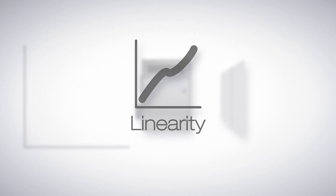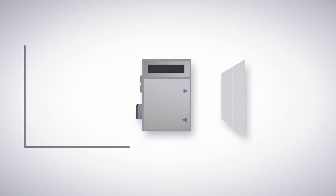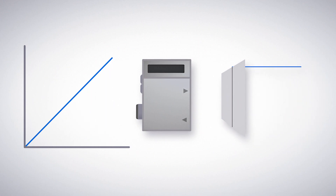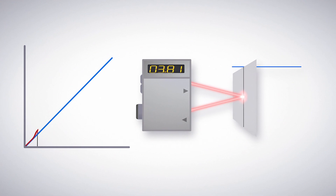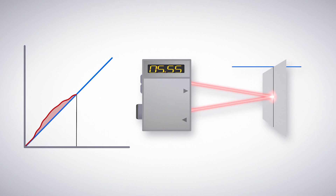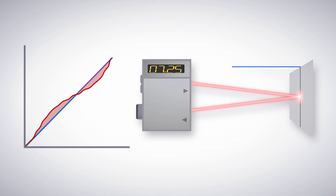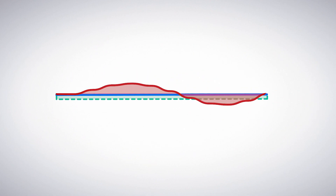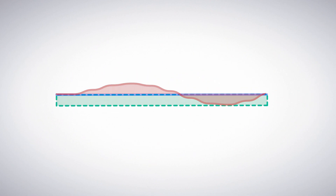Linearity is the maximum deviation between an ideal straight-line measurement and the actual measurement. It indicates how closely a sensor's analog output can approximate a straight line when measuring across the sensor's range. Linearity is the most valuable specification in known IO-Link applications, because the more linear the sensor, the more easily any consistent inaccuracy can be calculated for and removed.